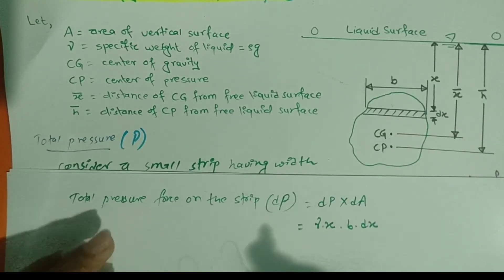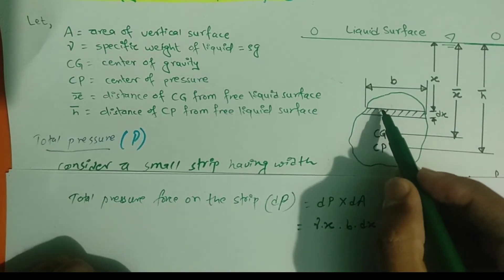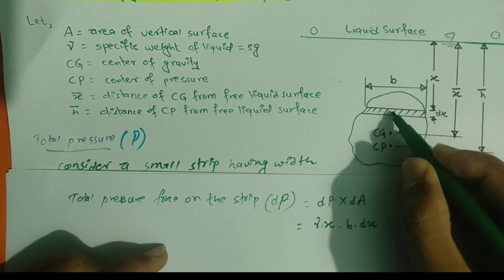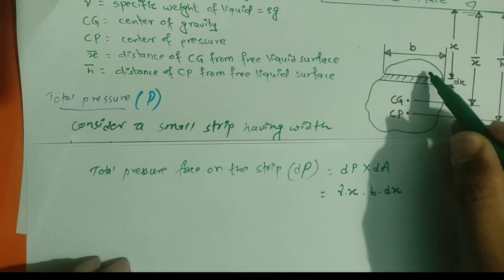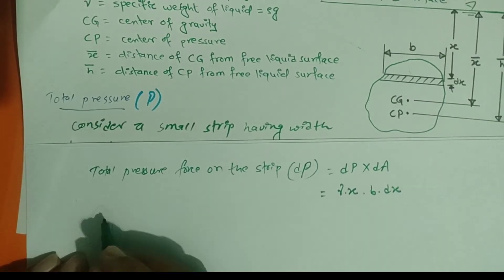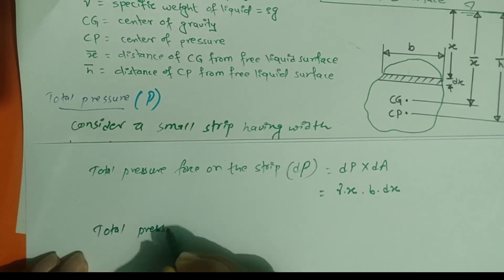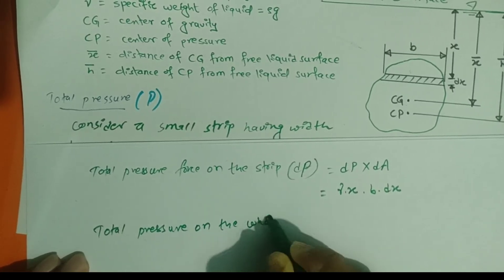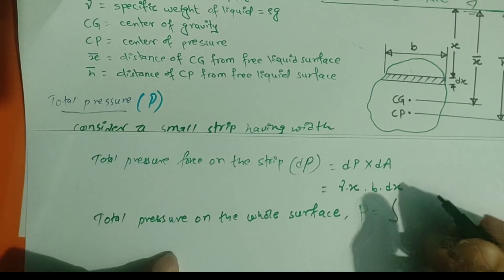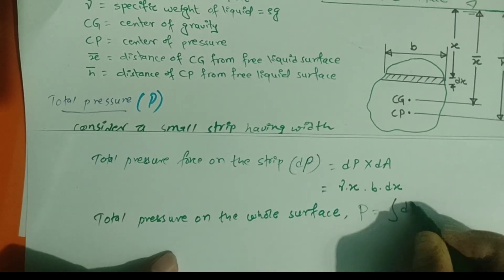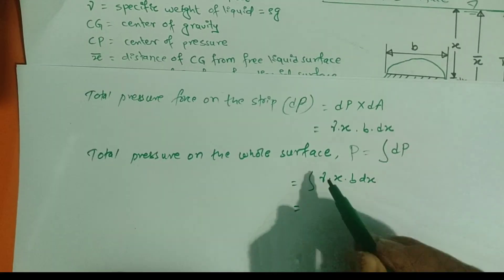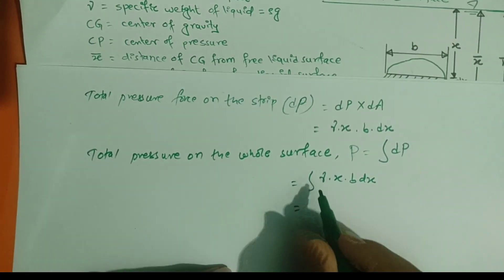We are going to calculate the total pressure on the whole surface, so we divide the whole surface into small strips. The total pressure force on the whole surface equals the sum of the total pressure forces on all small strips, which means we calculate by integration: P = ∫dP = ∫γ·x·b·dx. Since the specific weight γ is constant, we take it out from the integration: P = γ∫x·b·dx.